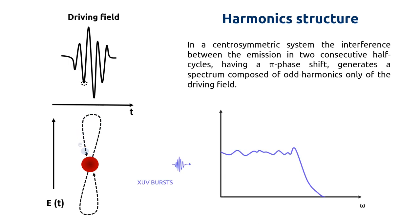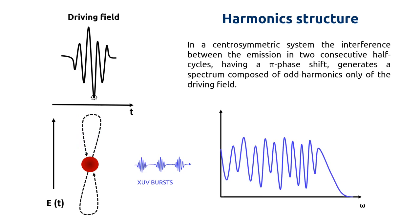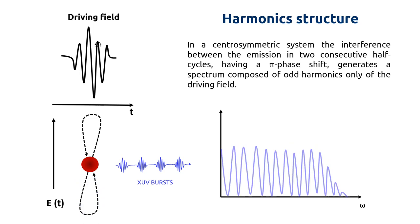Therefore, if we consider a centrosymmetric target, such as an atom, the spectrum of emitted radiation is composed by the odd harmonics only of the driving frequency. This is due to the interference between the light produced in two opposite half cycles, which exhibits a pi phase shift.